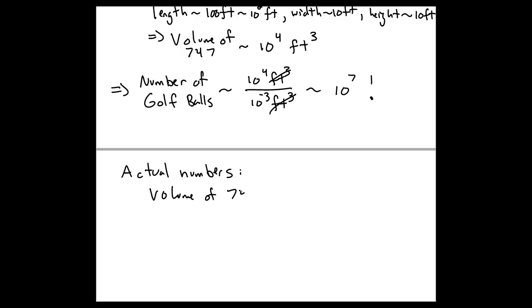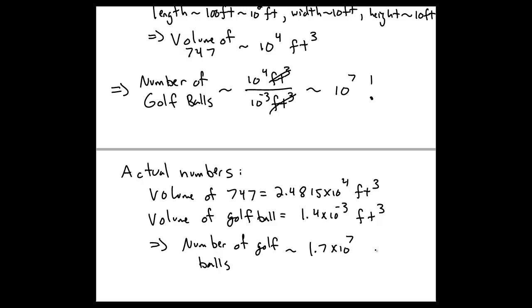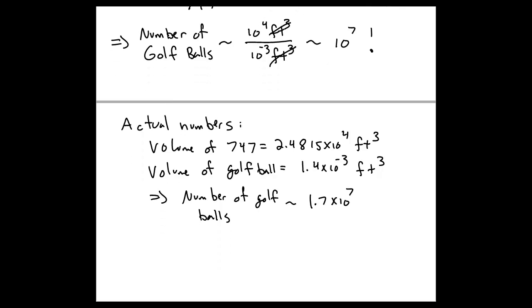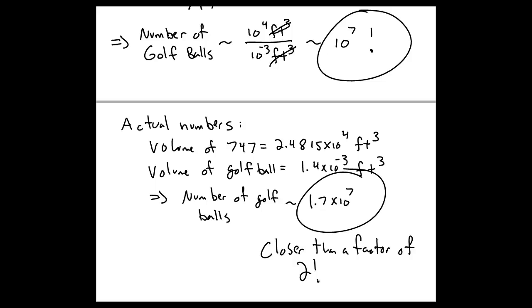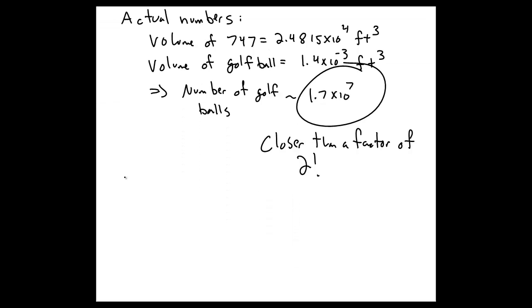If I use some actual numbers and look up the volume of a 747, the volume of 747 is about 2.5 times 10 to the 4 feet cubed, and the regulation volume of a golf ball is about 1.4 times 10 to the minus 3 feet cubed. So if I just divide those two to find the number of golf balls I expect inside of 747, I find something like 1.7 times 10 to the 7. And so interestingly enough, this is closer than a factor of 2 with all the estimates that we made, and that's the power of Fermi problems.